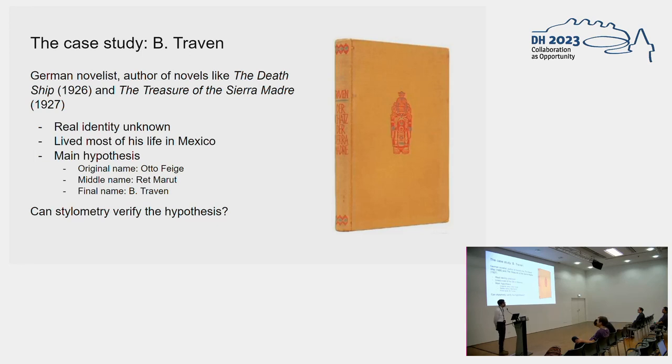We're talking about the novelist B. Traven, who was quite well known in the first half of the 20th century. His most well-known novels are probably The Death Ship and The Treasure of the Sierra Madre, which was adapted into a Hollywood movie in the 1940s immediately after the Second World War.